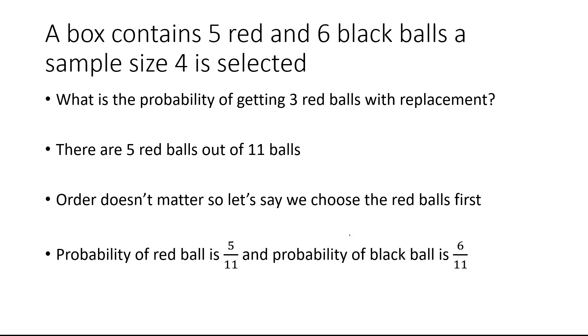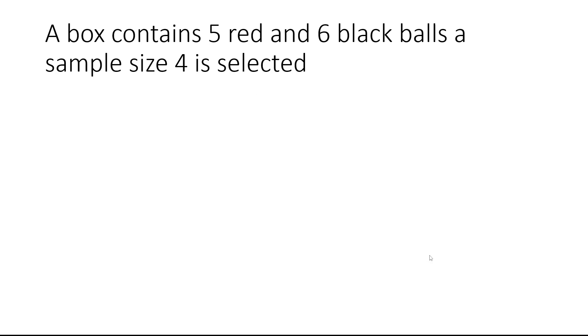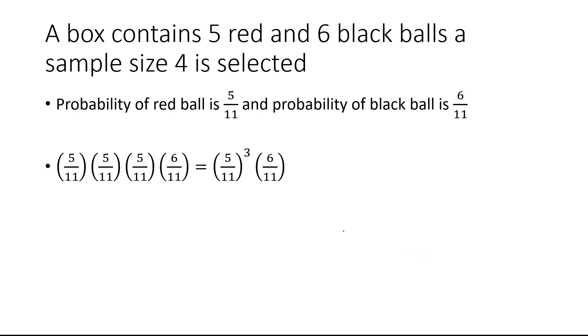The probability of selecting a red ball is five over eleven, and the probability of selecting a black ball is six over eleven. So the probability of selecting the first ball is five over eleven, the second red ball is also five over eleven, and same thing for the third ball.